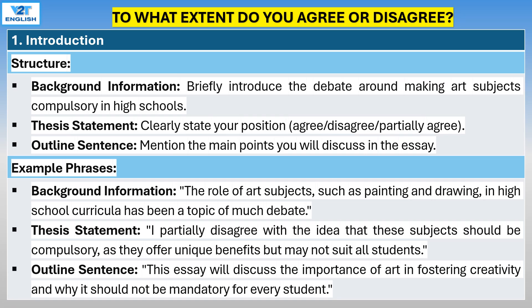Introduction structure: Begin with background information — briefly introduce the debate around making art subjects compulsory in high schools. Then provide a thesis statement clearly stating your position: agree, disagree, or partially agree. Follow with an outline sentence mentioning the main points you will discuss in the essay.